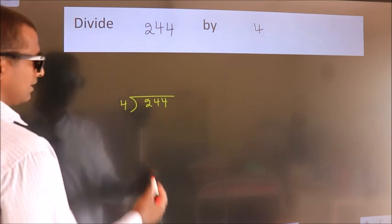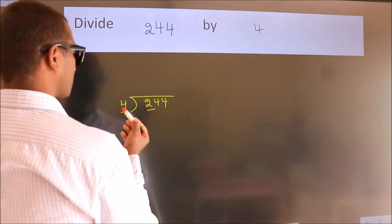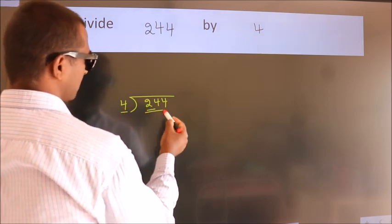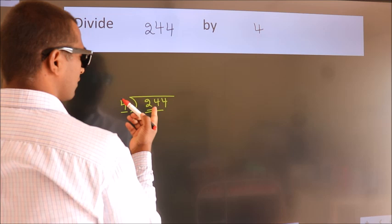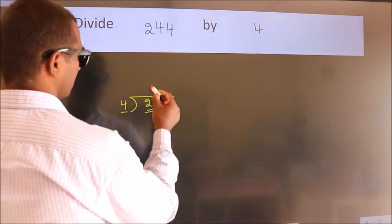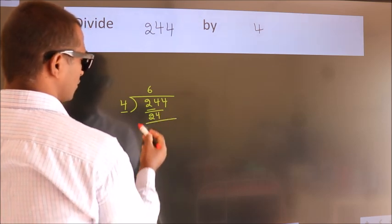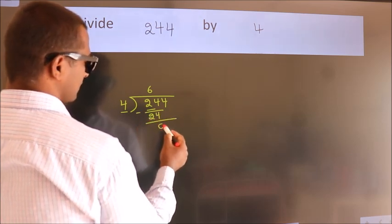Next. Here we have 2, here 4. 2 is smaller than 4, so we should take 2 numbers: 24. When do we get 24? In the 4 table, 4 times 6 is 24. Now we should subtract, we get 0.